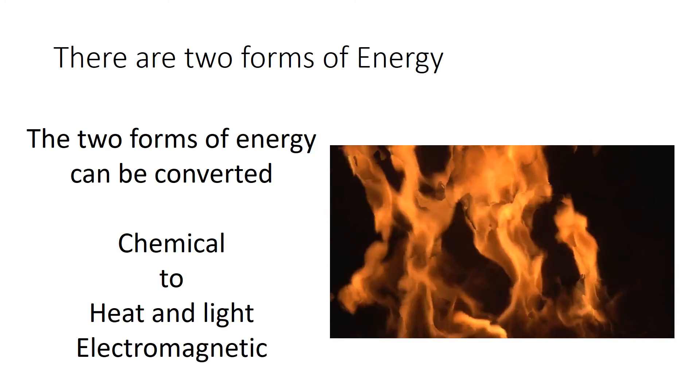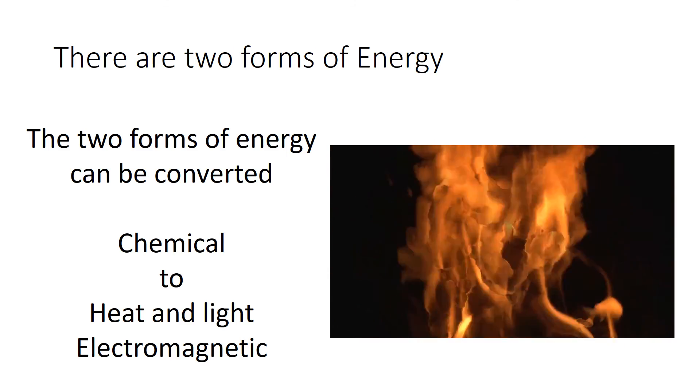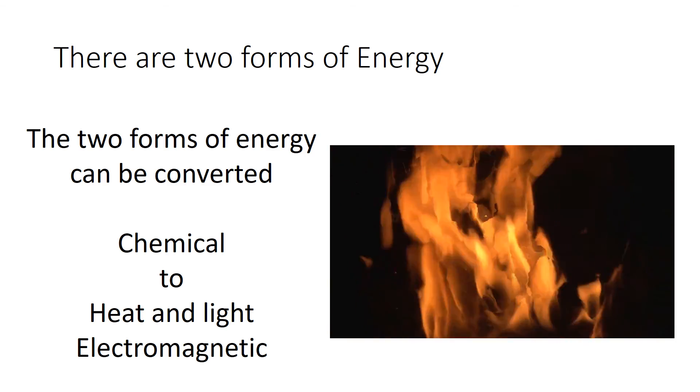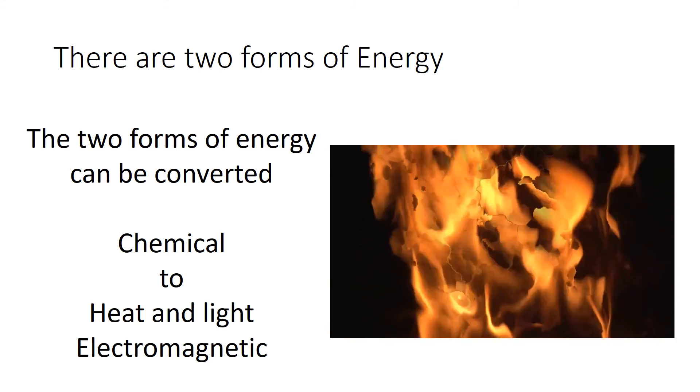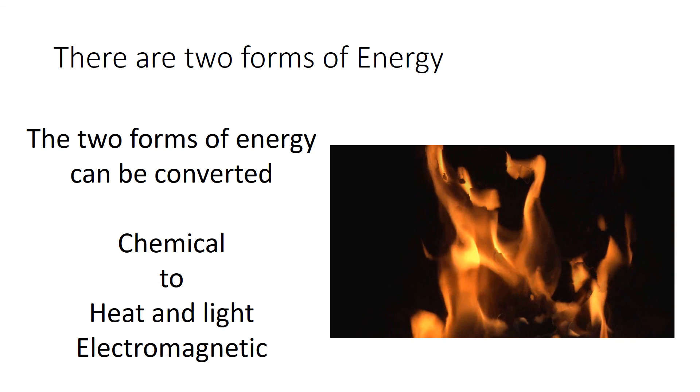And lastly, chemical energy can be converted to heat and light, which is part of the electromagnetic spectrum. So when you see a fire like this, what's happening is the cellulose or whatever it is you're burning, the potential energy is being converted to electromagnetic energy.